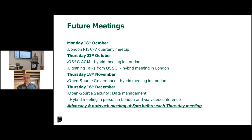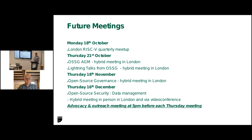We have some future meetings. On the 18th of October, there is the London RISC-V quarterly meetup. On the 21st of October, there's another Open Source Specialist Group meeting — it is the AGM. It will be hybrid again, and there will be lightning talks from the committee members. On the 18th of November, there is our monthly meeting on open source governance. And then in December, it's all about security and data management. Before each monthly Thursday meeting, there is the advocacy and outreach meeting, which everyone's welcome to attend.